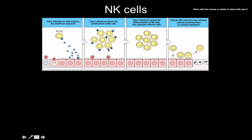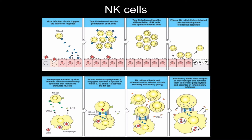Here's a diagram showing cells that are being virally infected and getting activation of the interferon response, which we talked about in another video. These interferons cause natural killer cells to come to the site, start dividing and proliferating, and then mature into their cytotoxic effector cells. They bind one cell at a time and kill one cell at a time — very specific, very powerful, but they don't cast a wide net.